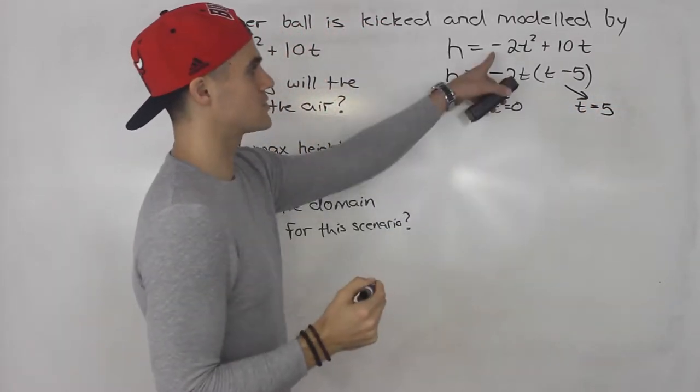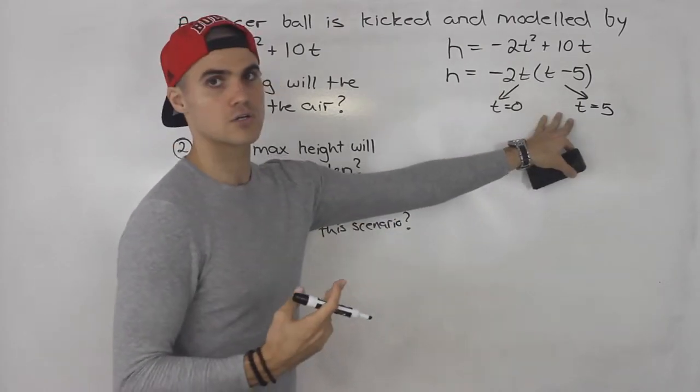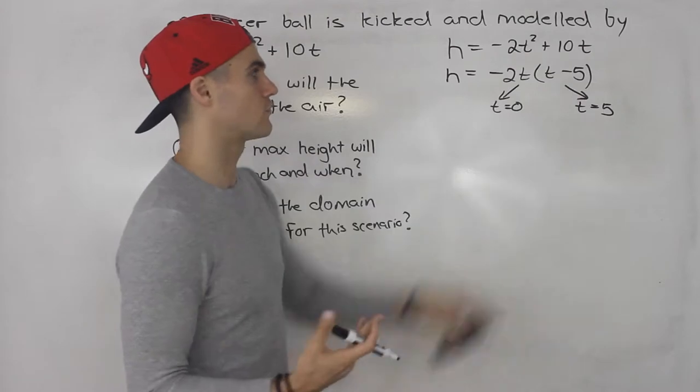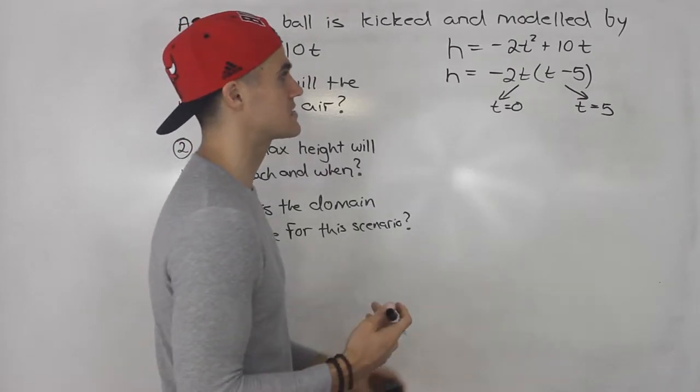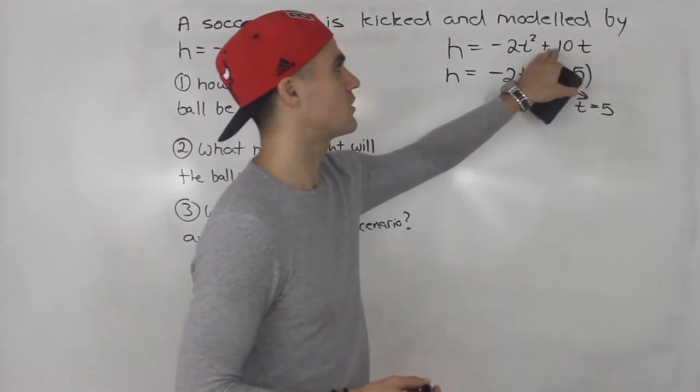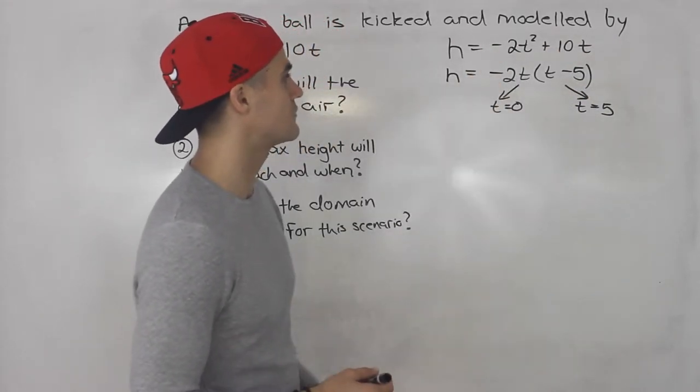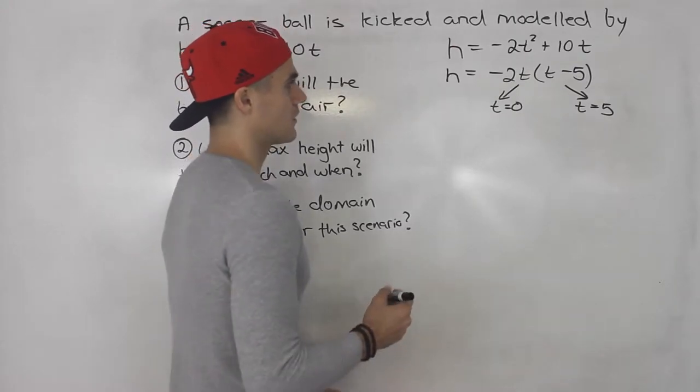Now this factored smoothly. You're not always going to get an equation that factors smoothly. Sometimes to get these intercepts, you're going to have to plug into maybe the quadratic formula, right? Because they might be decimals. In this case, it's pretty smooth. There's no c value, so you could always take out at least a t. And then in this case, we could take out a negative 2 as well.